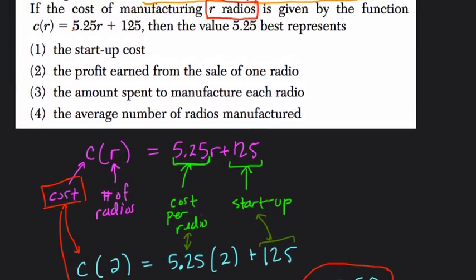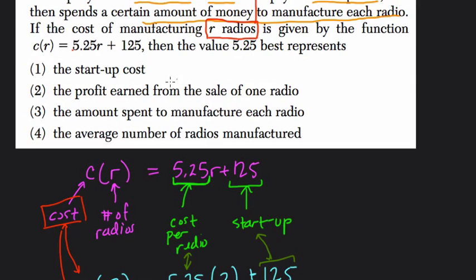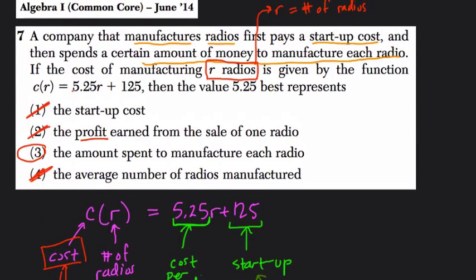So if we go back to our choices, $5.25 is not the startup cost. That was $125. The profit earned. Well, we're not looking at profit. Profit is what you make after you've lost money from expenditures. That's not us. The amount spent to manufacture each radio is our answer. The average number of radios manufactured has nothing to do with this equation, right? We're not looking at that at all. So this equation just models, based on any number of radios, how much our total cost would be.